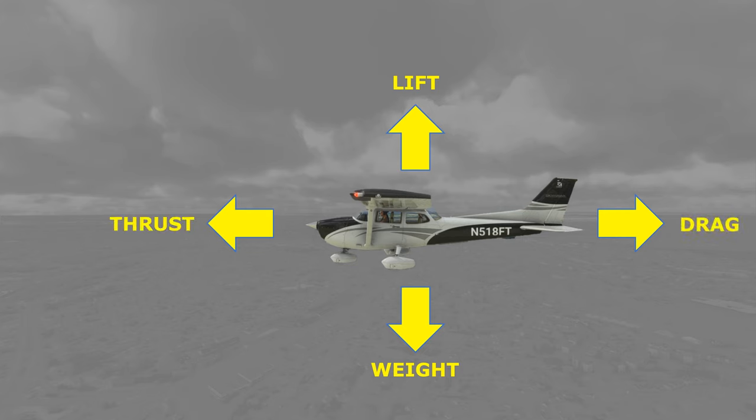These forces can be expressed in pounds. For example, our aircraft could weigh 2,000 pounds and if we're in level flight, we also have 2,000 pounds of lift. But what are the factors that are generating those 2,000 pounds of lift, and how can we as pilots control one or more of those factors?